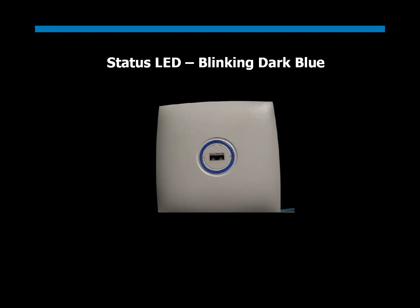Another very frequent event in a Cisco Unified Wireless environment is a Lightweight Access Point downloading images from the controller. A Lightweight Access Point will download an image from the controller if it is the first time it registers with the controller, or if the image on the access point is different from that of the controller. When this happens, the status LED blinks dark blue, and this continues until the image download is completed.